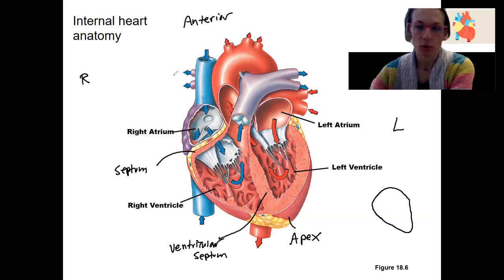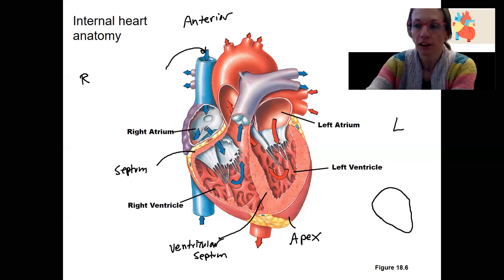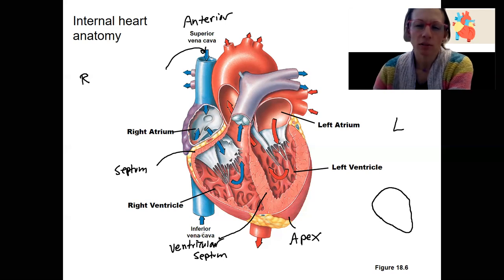Before that, I want to go back to starting with the right here and walk through these structures. So what did I just point to? That's the superior vena cava. Inferior is down there. That is draining blood, receiving blood from systemic circulation, deoxygenated blood, which is shown here in blue.